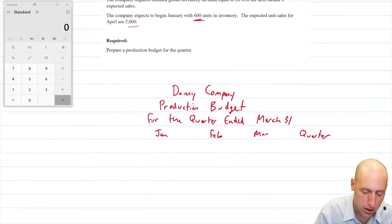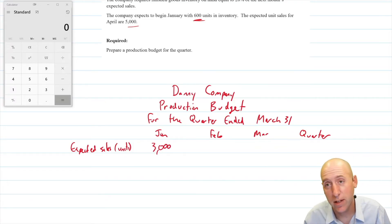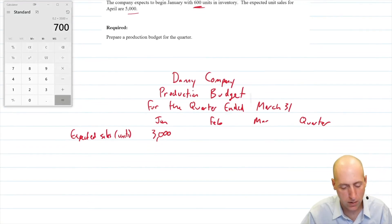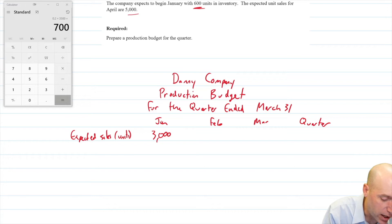Our January sales are going to be 3000 and that's our expected sales in units, not in dollars here. And it was 3000 units. So if I sell 3000 units, I better make 3000 units. But I also want to have some leftover. It says we want to end with 20% of next month's expected sales ready to go. The company requires finished goods inventory on hand equal to 20% of the next month's sales. So we're in January here. We want to end with 20% of February's stuff ready to go. 20% times 3500 is 700. So that is our desired ending inventory. We're going to add that.